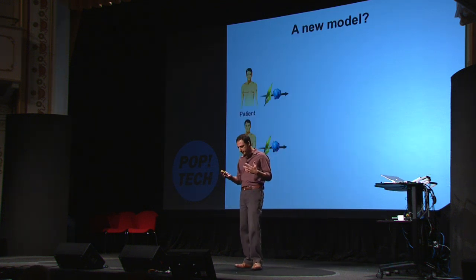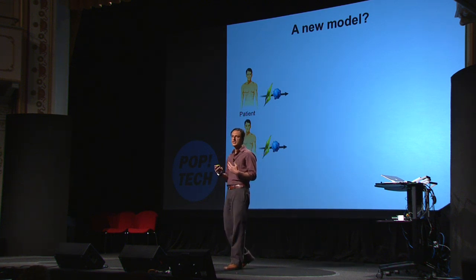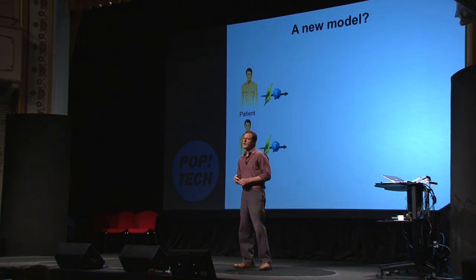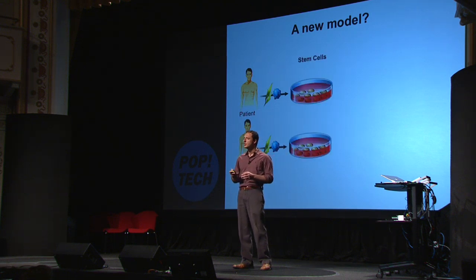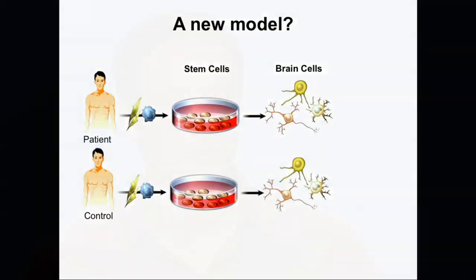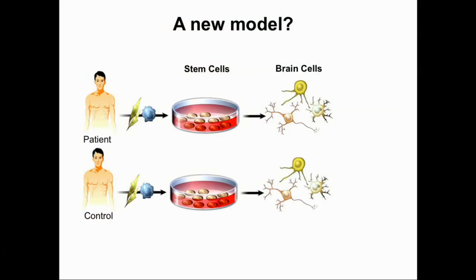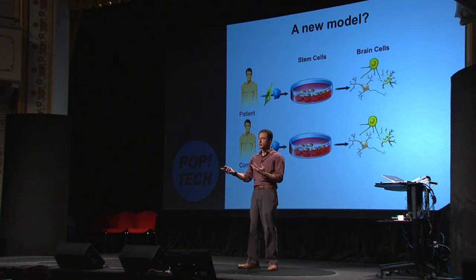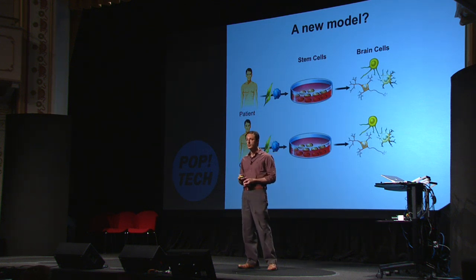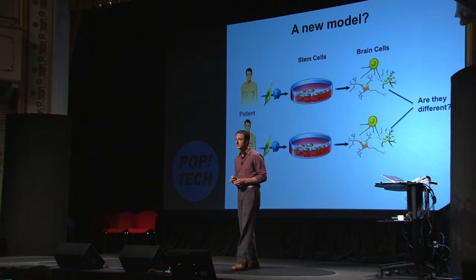So we take a different strategy. We take advantage of these peripheral cell types that are easy to get and find ways to transform those cells into an immature stem cell state so we can propagate lots of them in the lab. Because they are stem cells, we can induce them or guide them to specialize into brain cell types. If you do that with a group of patients and a group of control non-affected individuals, you can start looking for differences.